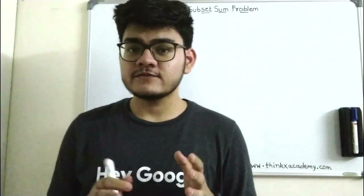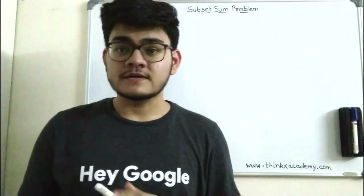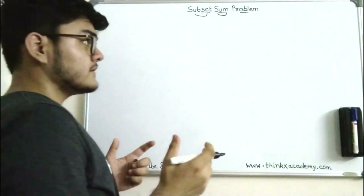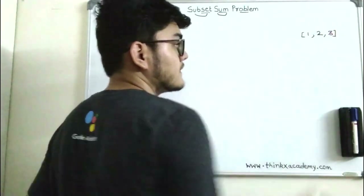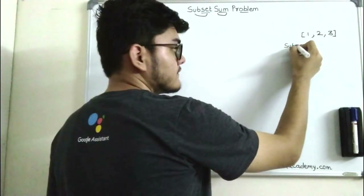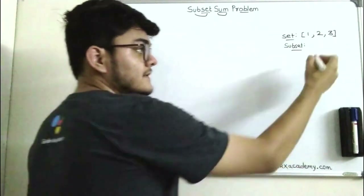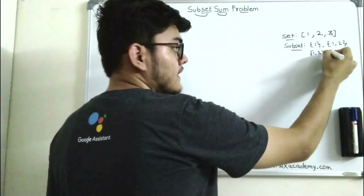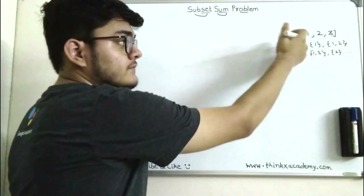Welcome to ThinkX Academy. In this tutorial we are going to discuss the Subset Sum problem. This problem has two words: subset and sum. We are going to take a set of numbers — in this case a set of three numbers. A subset is a combination of some or all the elements of a whole set, for example: {1}, {1,2}, {1,3}, {2}, and so on.